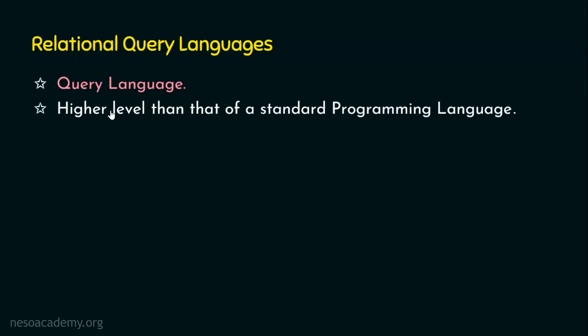Generally, this query language is considered to be at a higher level than that of a standard programming language. For example, when withdrawing money from an ATM, there is a user interface written in a high-level programming language. All our data are stored in the back-end database, and we retrieve it from the front-end written in a programming language. Inside that programming language code, we write the query language code. So the query language is embedded within the programming language, making it even higher level. If you want to retrieve your account balance, the query for that retrieval is embedded in the programming language — that's why the query language is at a higher level than a standard programming language.